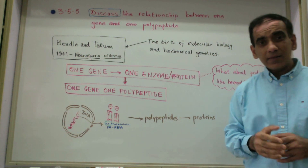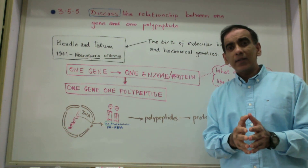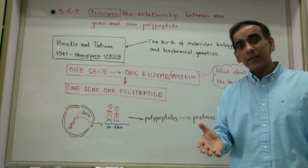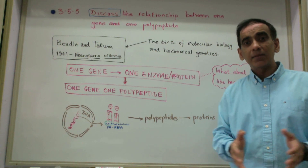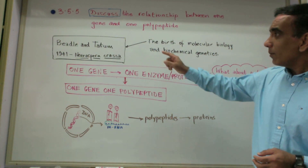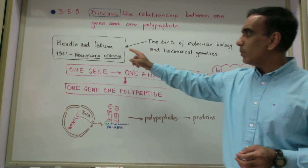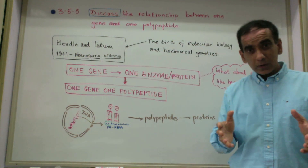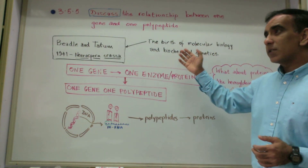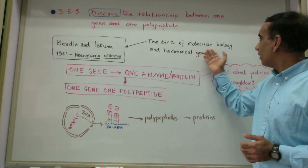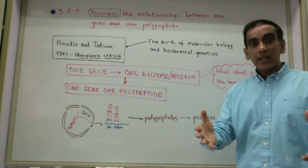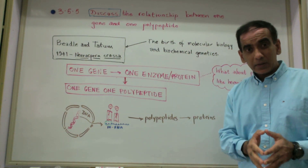The hypothesis first came about even before the structure of the DNA double helix was presented by Watson and Crick in the 1950s, going back to the time of Beadle and Tatum when they worked with the mold Neurospora. This really was the birth of molecular biology and modern-day biochemical genetics.